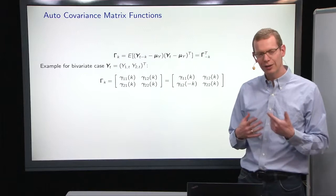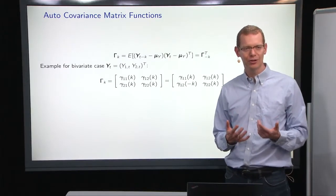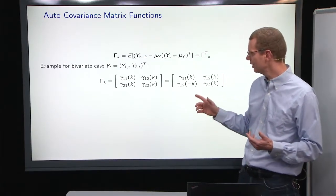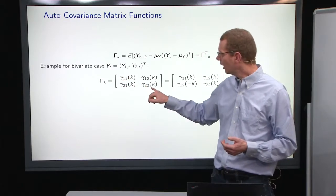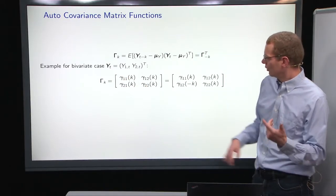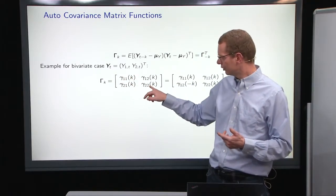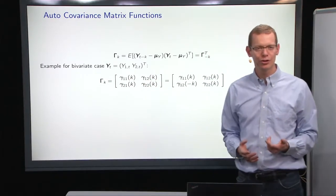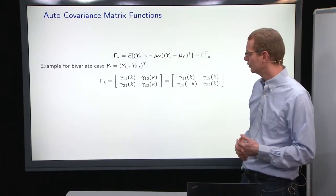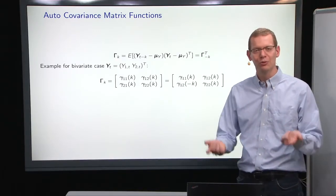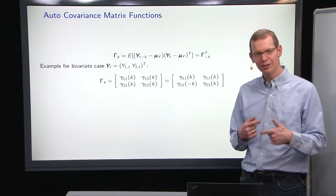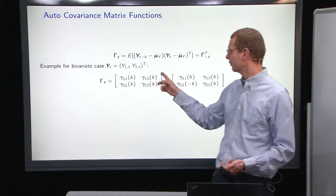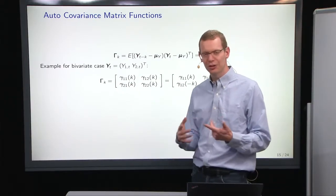Now, in the bi-variate case, just to see what you have more closely here, is that in the diagonal, you have the auto covariance structure with yourself, so the univariate, and in the off-diagonal, you have the cross covariance, or often, when plotting it, we'll look at the correlation instead of the covariances, but talking about covariances, we don't need to normalize.